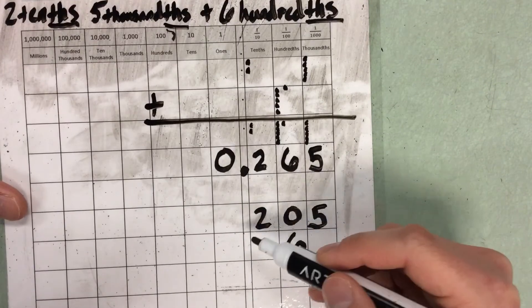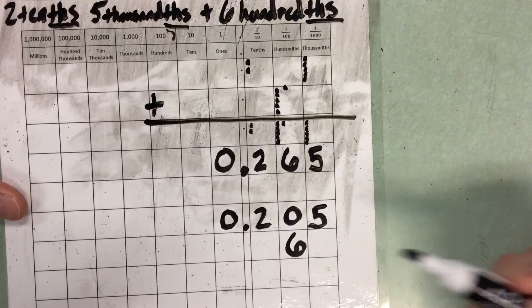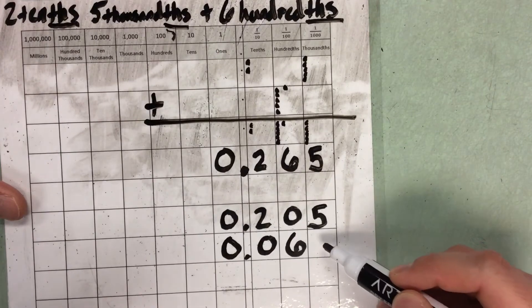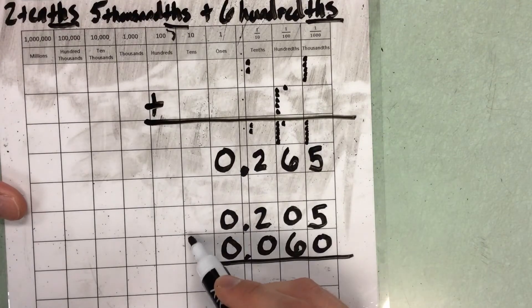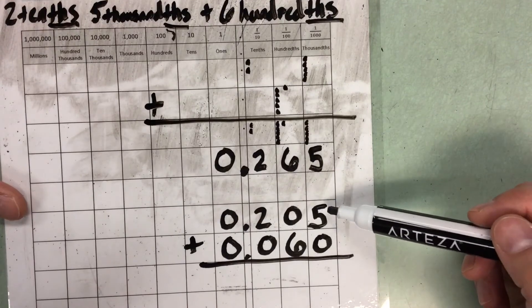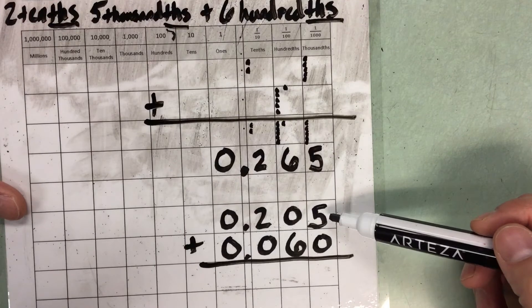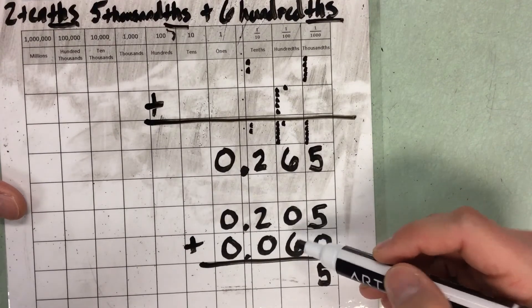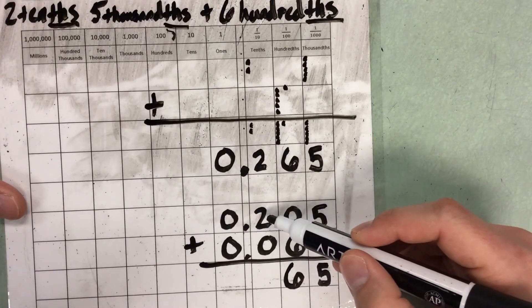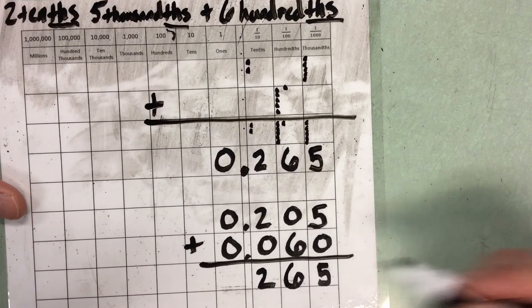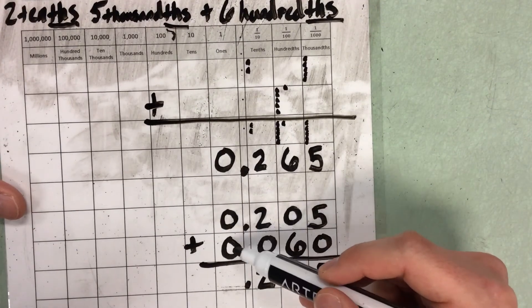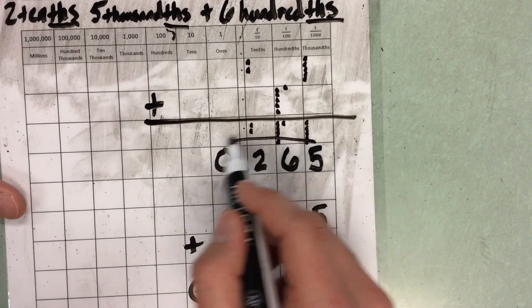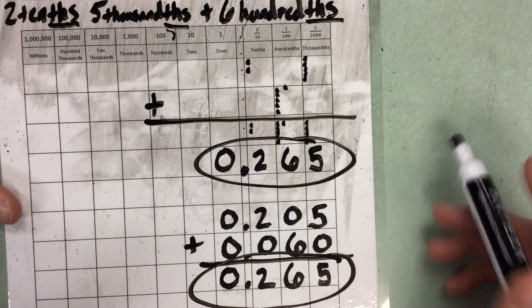The rest of these spaces I'm going to fill with 0s as placeholders. So I have a 0 and a decimal for my ones column. In 6 hundredths, there are 0 tenths, and I can add a 0 for thousandths because there are none. Now I can add using the standard algorithm: 5 thousandths plus 0 thousandths is 5 thousandths; 0 hundredths plus 6 hundredths is 6 hundredths; 2 tenths plus 0 tenths is 2 tenths; 0 ones plus 0 ones is 0 ones. So the answer is 0 and 265 thousandths — the same answer I got using the place value disks.